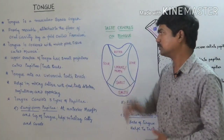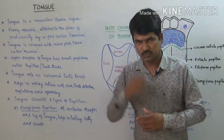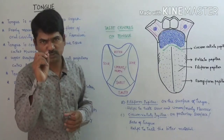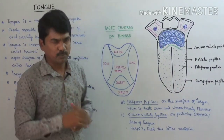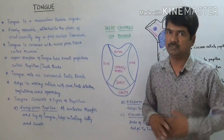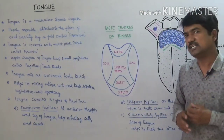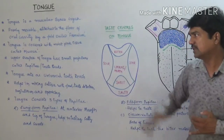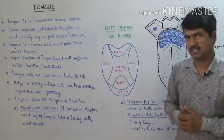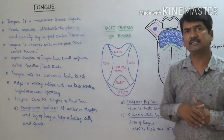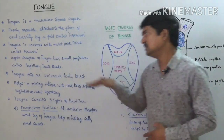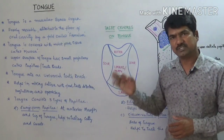The upper surface of the tongue has small projections called papillae, also known as taste buds, which provide the sense of taste. The tongue also acts like a universal toothbrush — any unwanted material placed between the teeth can be removed by the tongue, which is why it is referred to as a universal toothbrush.